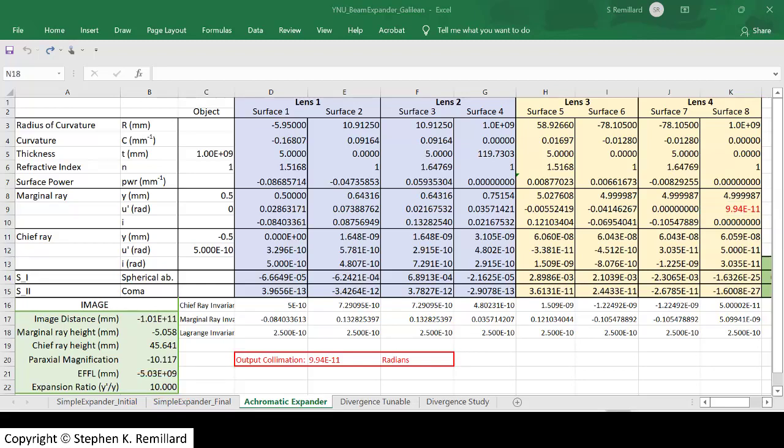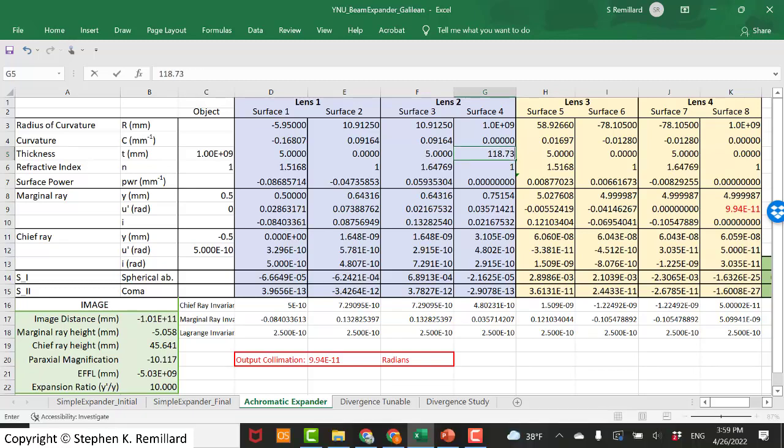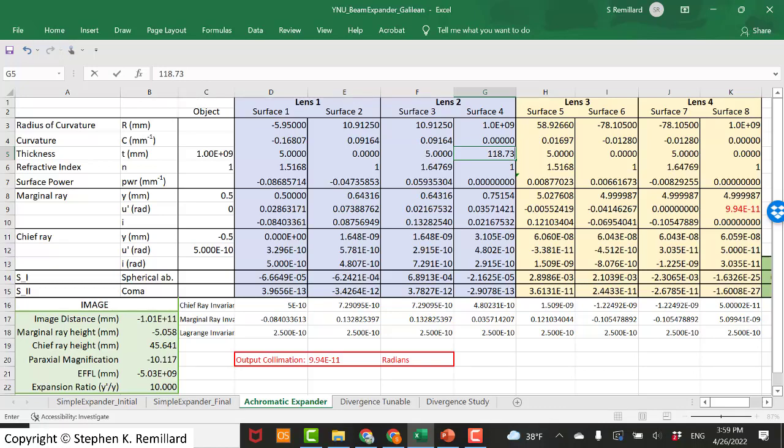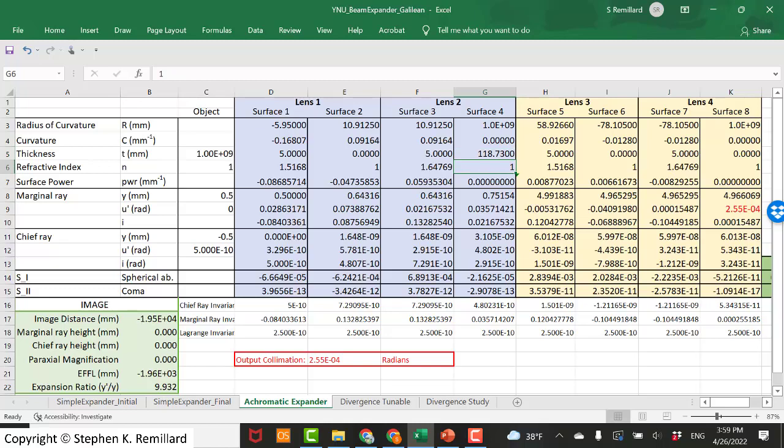This nearly perfect output collimation is sensitive to the separation between the two lens groups. For example, if the 119.73 separation was reduced by 1 millimeter, watch what happens to the 9.9 times 10 minus 11 output beam divergence. It changes dramatically. After that, it doesn't change so much, but 2 times 10 to the minus 4 is still good enough for a lot of laboratory uses.